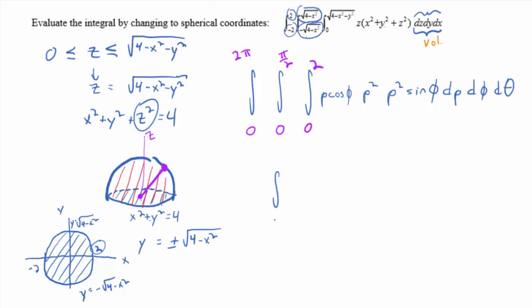I will, I think I'll have you guys evaluate this, but I'll clean it up a little bit. Zero to two pi, integral zero to two pi, integral zero to pi halves, integral zero to two. Rho to the what power? Five. And then, cosine phi, sine phi, did I forget anything? There's no function of theta here. So, d rho, d phi, d theta.